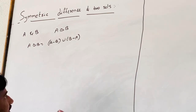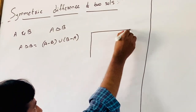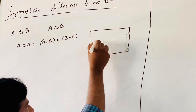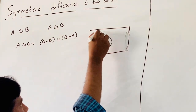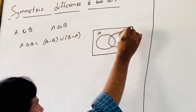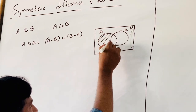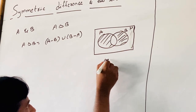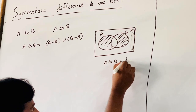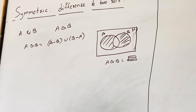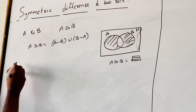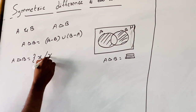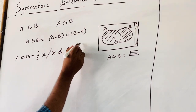The Venn diagram of the symmetric difference of two sets is shown. A delta B is called the shaded region. The set builder form of A delta B is equal to the set of H such that H does not belong to A intersection B.